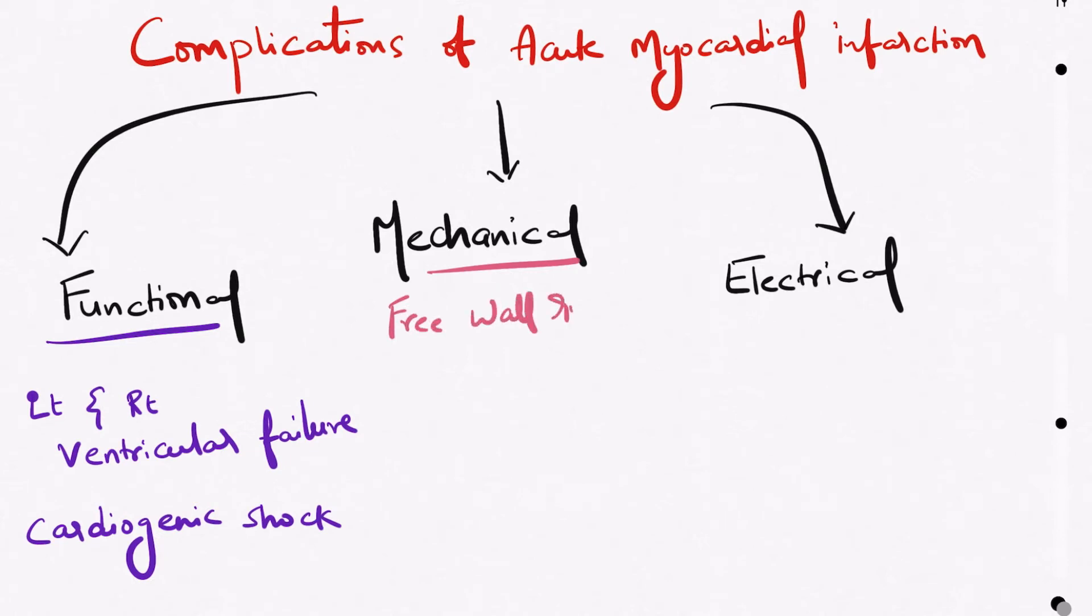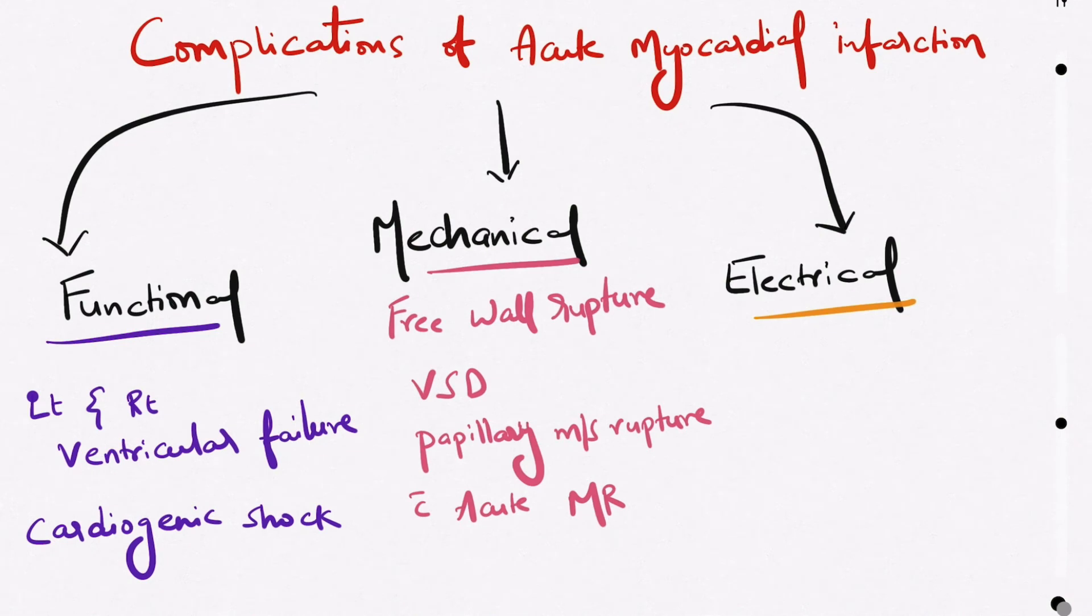Coming to mechanical complications, there may be free wall rupture in MI patients and ventricular septal defect. Papillary muscle rupture can occur in these patients, which leads to acute mitral regurgitation.